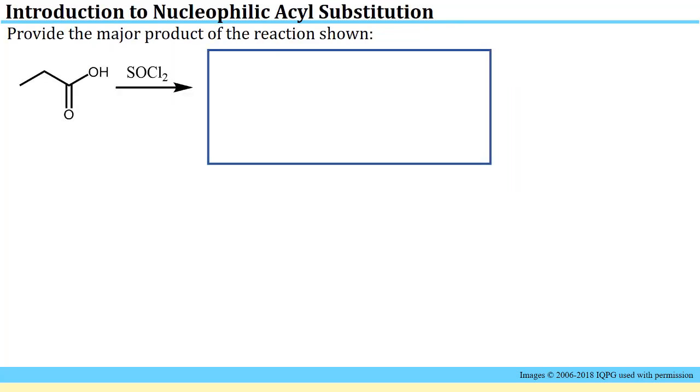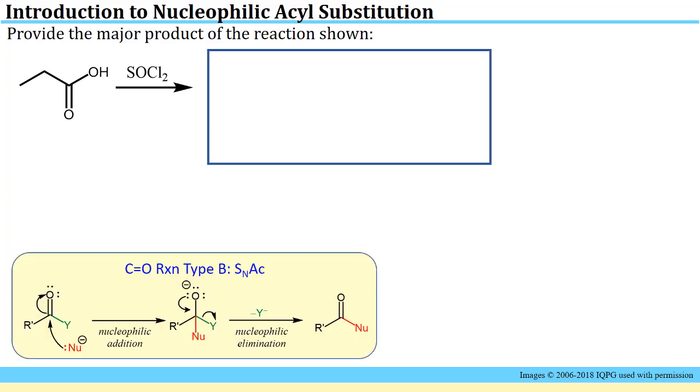Our first problem asks us to provide the major product of the reaction shown below, and it pays off to examine the general reaction for nucleophilic acyl substitution. In these types of reactions in general, you identify a nucleophile and a potential leaving group which may need to be activated, and the net result is that the nucleophile replaces that leaving group.